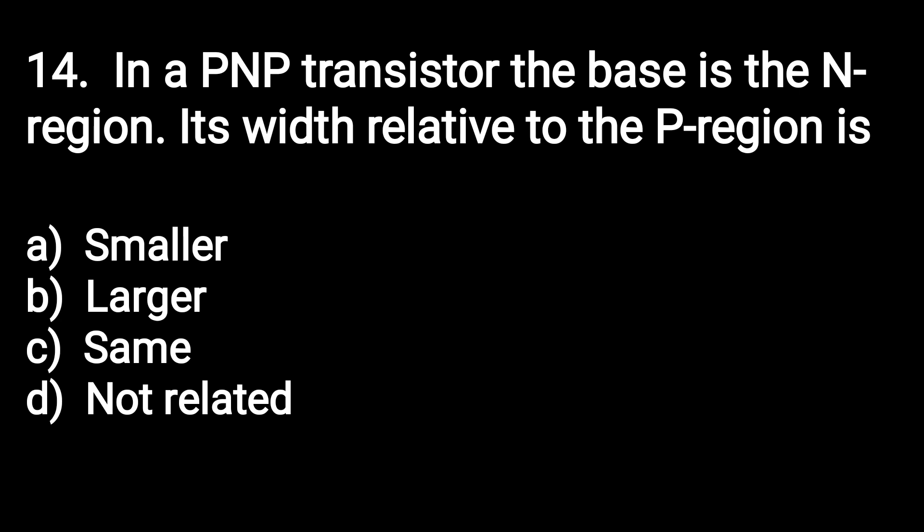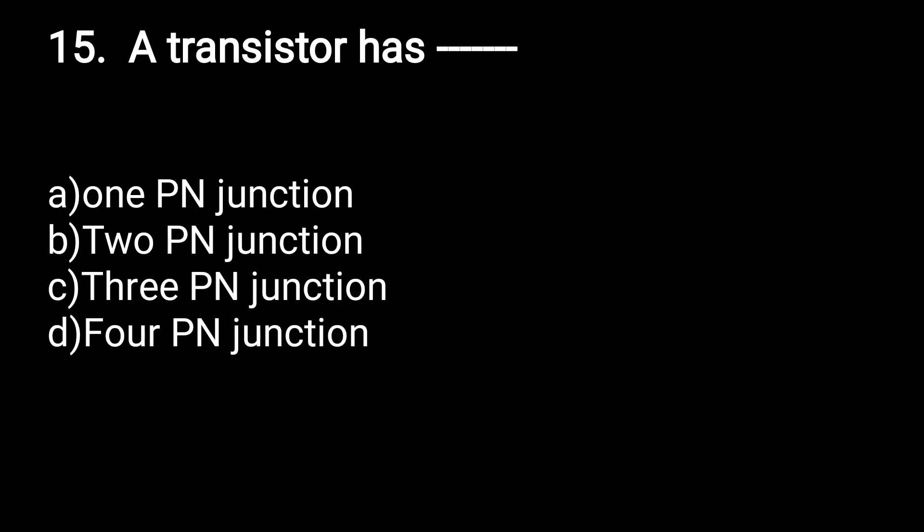In a PNP transistor, the base is the N region — its width relative to the P region is smaller (option A is correct). Next question: a transistor has how many PN junctions — 1, 2, 3, or 4? Option B is correct: a transistor has 2 PN junctions.